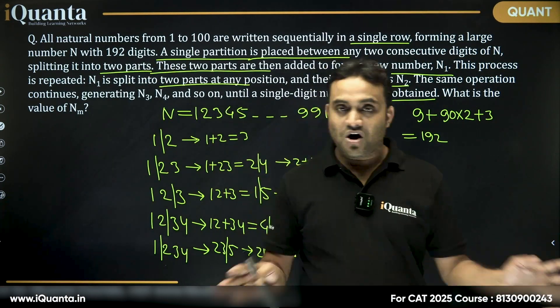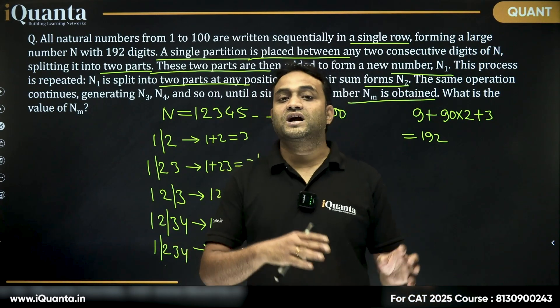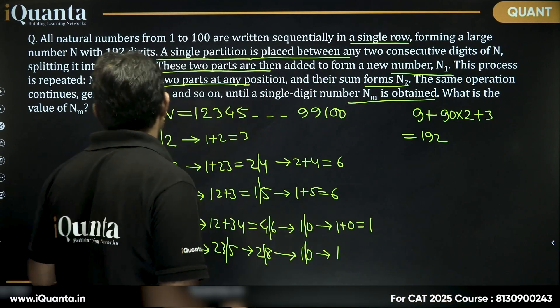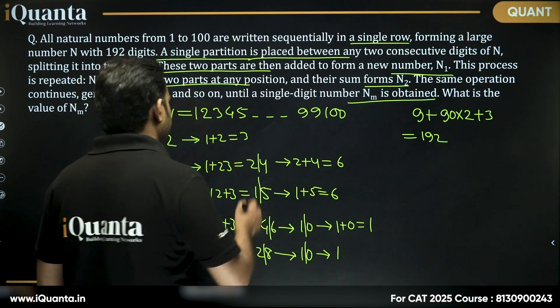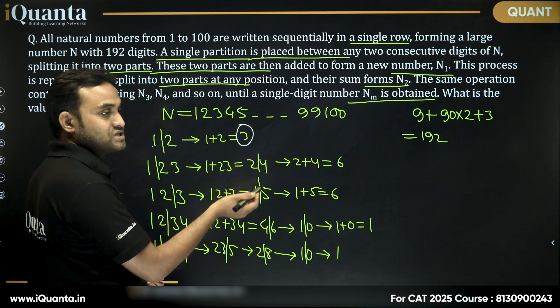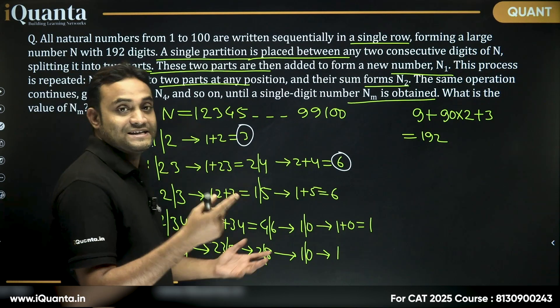So, it does not matter where we start with the partition and how do we continue. The result, the ultimate result in each case for a particular number will be same. Here the result is 3. What is 3? 3 is nothing but 1 plus 2 is 3. In this case, the result is 6. What is 6? 1 plus 2 plus 3 is 6.